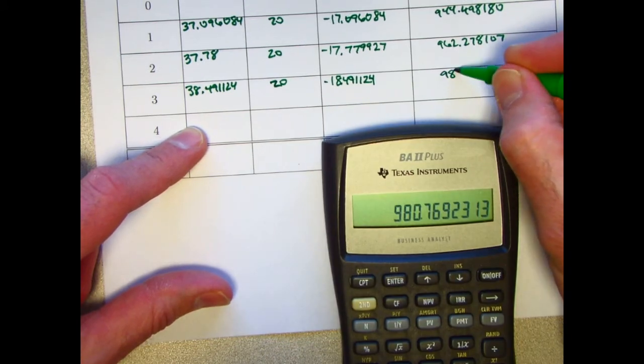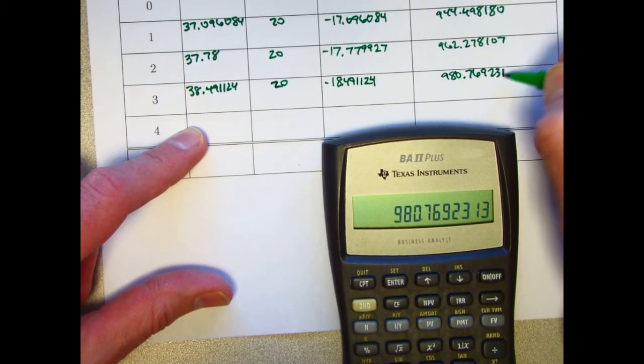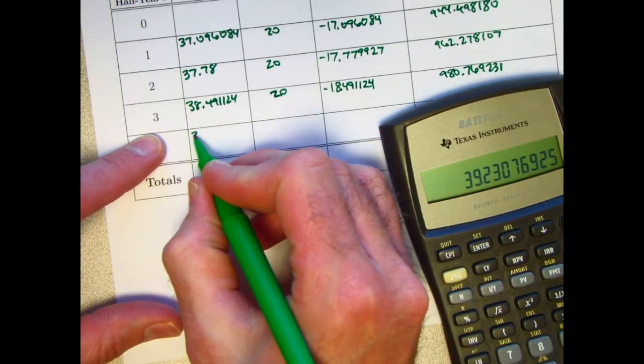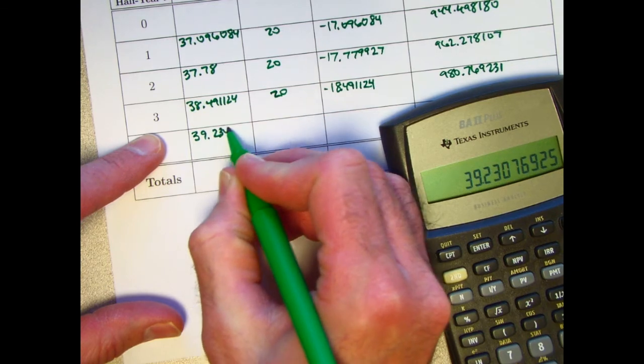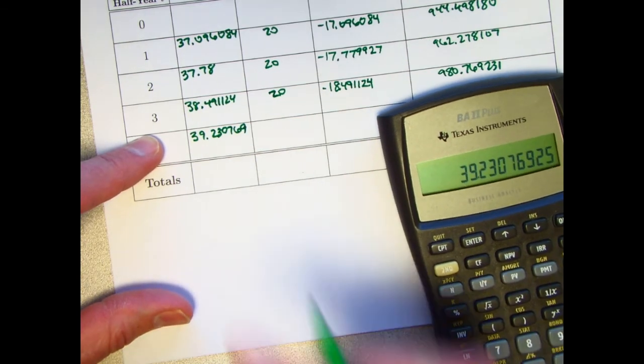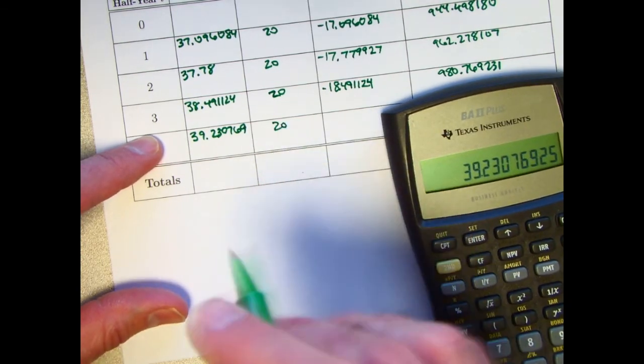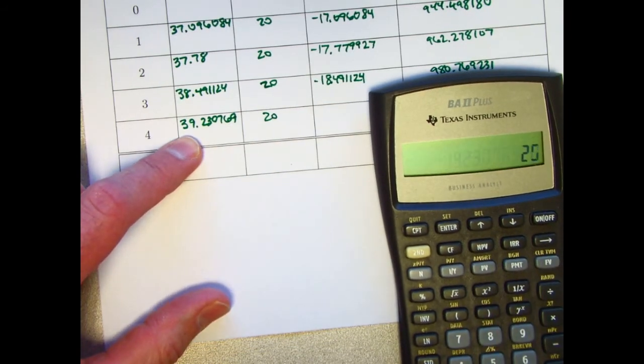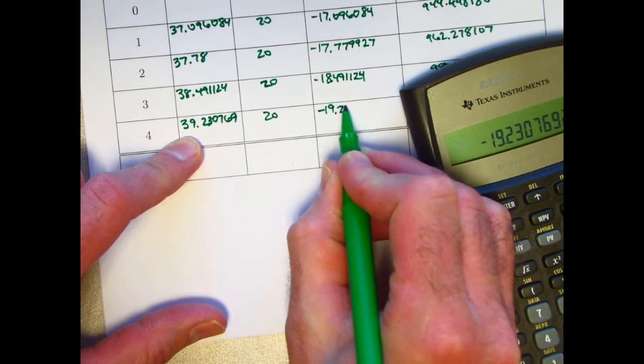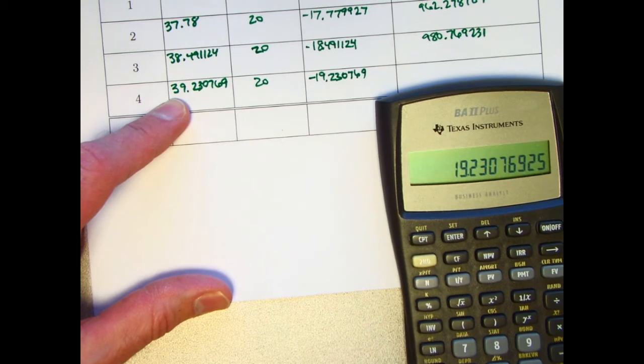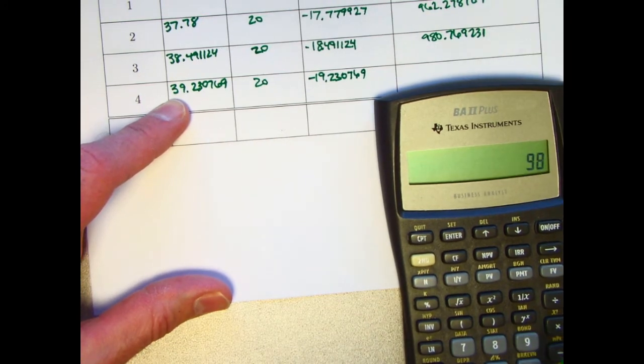Take this and subtract from 20. Negative 18.491124. Negate that to get a positive quantity and add to 962.278107 to get 980.769231. Getting close here. 4% of that, 39.230769.